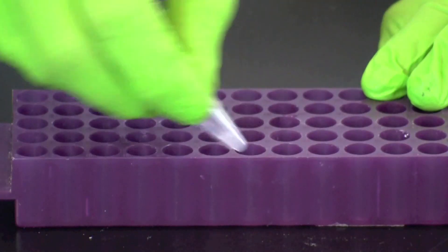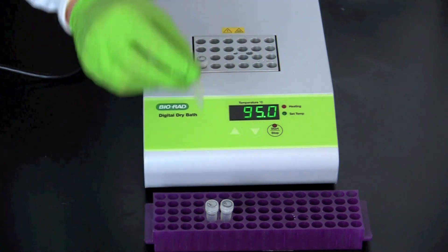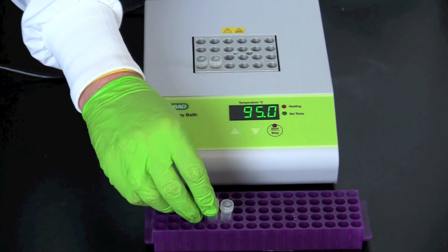Remove the tubes from the 56 degree incubation and vortex or shake them. Then incubate the tubes at 95 degrees Celsius for 5 minutes.